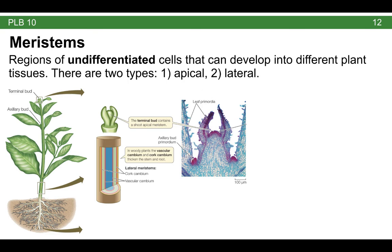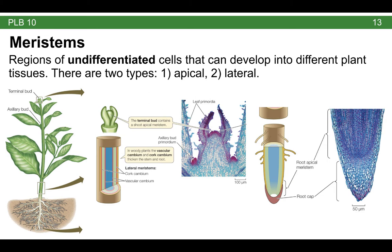Meristems are regions of undifferentiated cells that can develop into different plant tissues. In general, there are two kinds: apical meristems and lateral meristems. Apical meristems include the SAM and the RAM. Lateral meristems are going to expand the plant outward — so it grows wider — whereas apical meristems lengthen the plant either up with the shoot apical meristem or down with the root apical meristem. If we have a closer look, a terminal bud at the very tip of the plant has a shoot apical meristem. Leaf primordia are emerging leaves differentiating from the tissues in the meristem area.